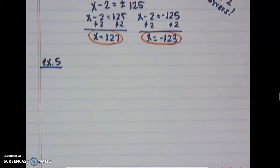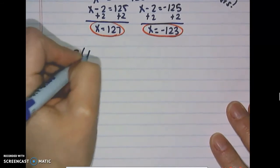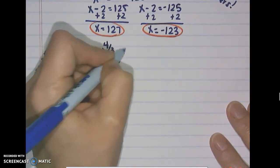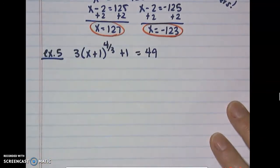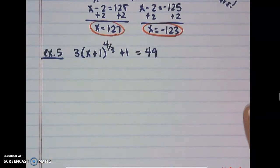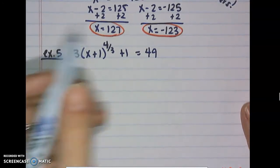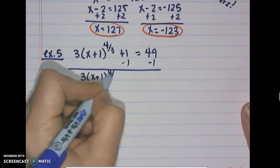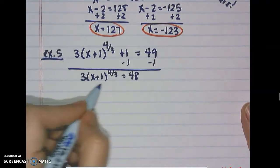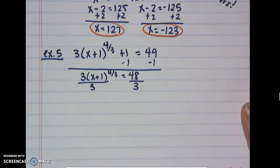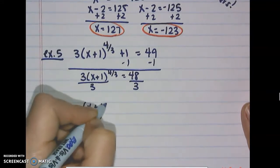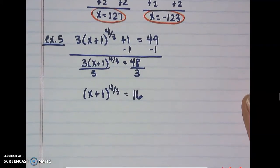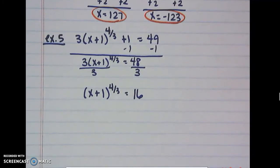Next: 3 times the quantity (x plus 1) to the 4/3 power plus 1 equals 49. Just like with radicals, we isolate the parenthetical expression. Subtract 1 from both sides, then divide by 3, giving us (x plus 1) to the 4/3 power equals 16.